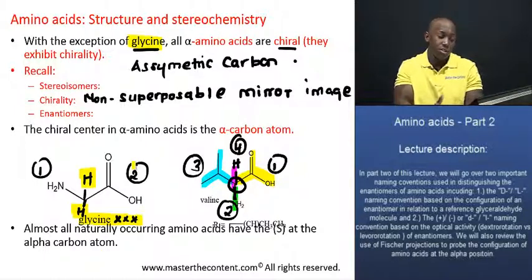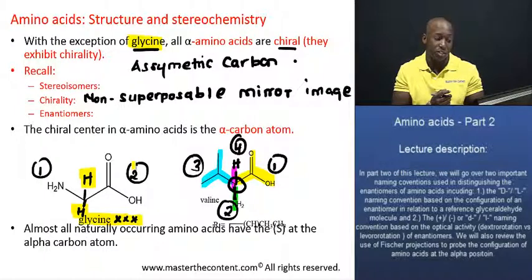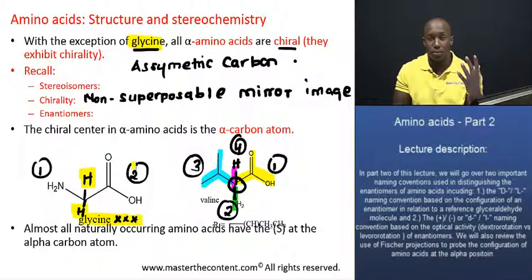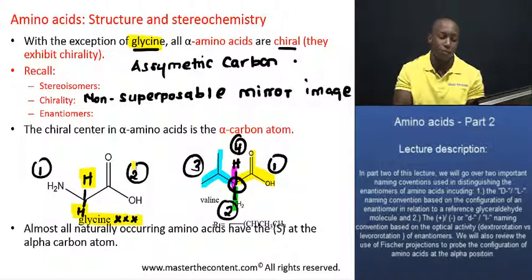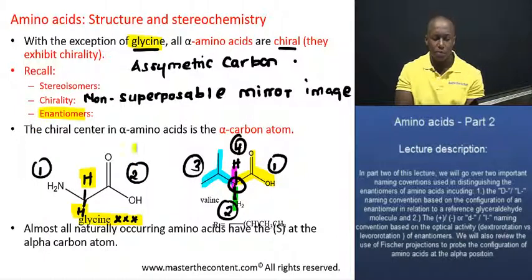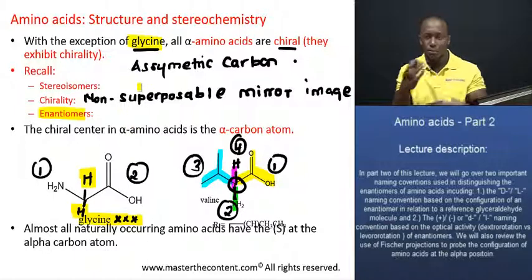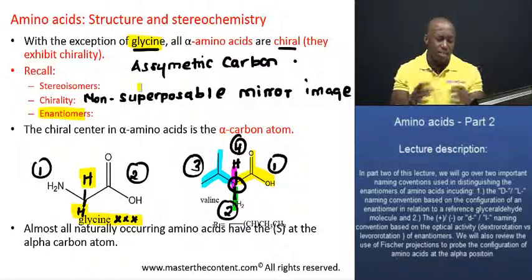Enantiomers are basically non-superposable mirror images of each other. If you took a chiral molecule and got its mirror image, those two would be what we refer to as enantiomers. That's a bit of a recap to jog your memory and get you eased into what we're going to be talking about.